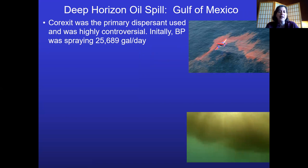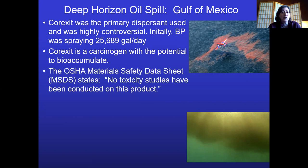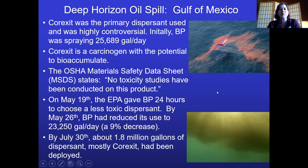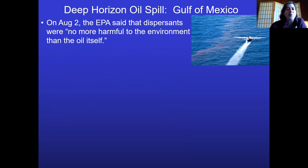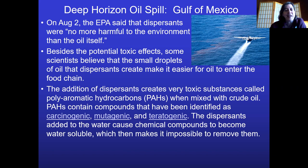A dispersant called Corexit was used to break up large oil droplets into smaller ones, making the oil less visible. It was highly controversial: BP used it heavily — about 1.8 million gallons total. It's a potential carcinogen and can bioaccumulate. The EPA told BP to stop using it because of safety concerns. While it made the oil appear to go away, it actually just broke it into small pieces that could more easily enter the food chain. The EPA later said it was no more harmful to the environment than the oil itself — but that may not be saying much.